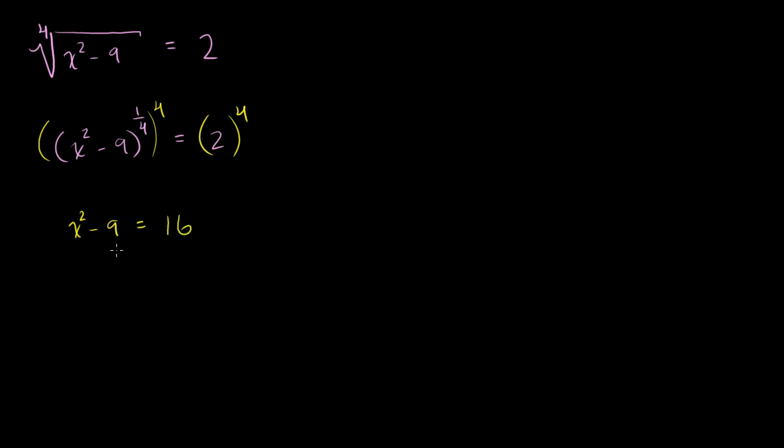Now, there's two ways we can do it at this point. We can add 9 to both sides of this equation. I'll do it this way in yellow. So if you add 9, you get x squared is equal to 25. Take the square root, not just the principal square root, take the positive and negative square root of both sides of this equation, and you get x is equal to plus or minus 5.